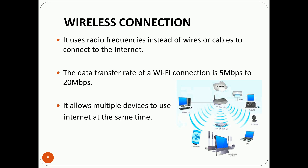The data transfer rate of a Wi-Fi (wireless fidelity) connection is 5 Mbps to 20 Mbps. It allows multiple devices to use the internet at the same time, meaning many people can use it simultaneously.